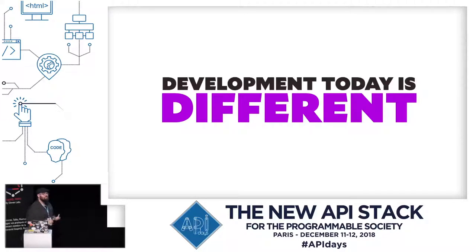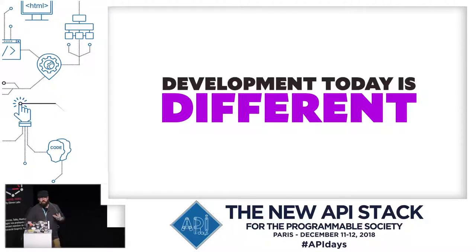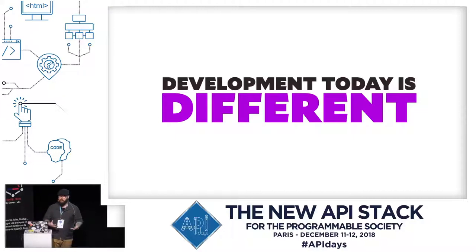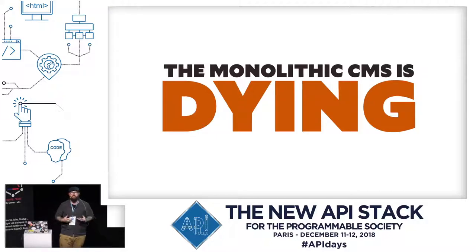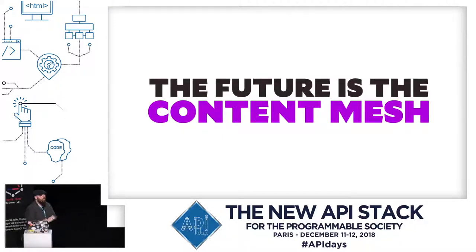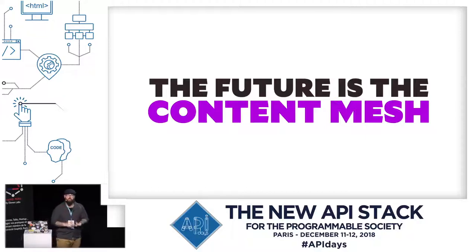Because development today is different. The way that we used to build things was where all data came from one place — we developed on a monolithic app and we shipped a monolithic app to our end users. But the monolithic CMS, the monolithic way to manage data, is dying. Even major players like Magento, WordPress, and Drupal are moving to a headless model.